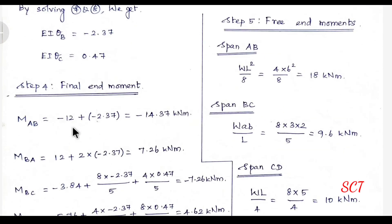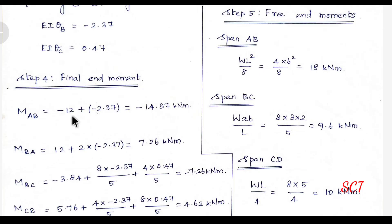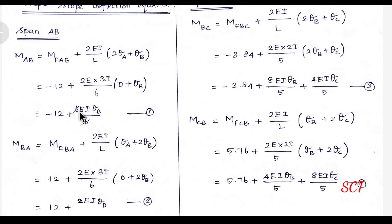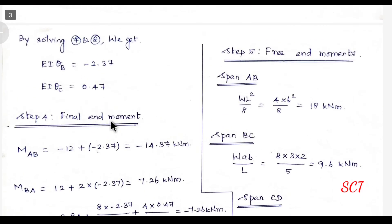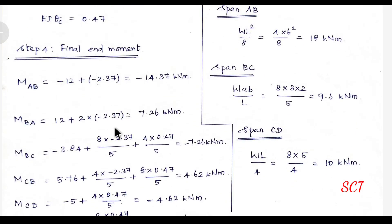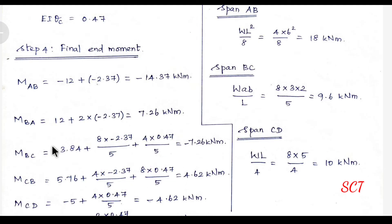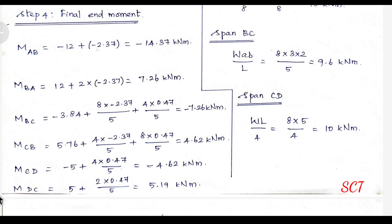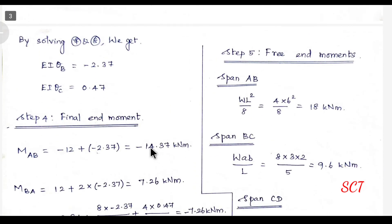Step 4: Final end moments. For M_AB: substituting minus 12 plus EI·θB value. Substituting EI·θB into the expression gives M_AB. Then substituting EI·θB and EI·θC values into all equations to get the final end moments for each span.